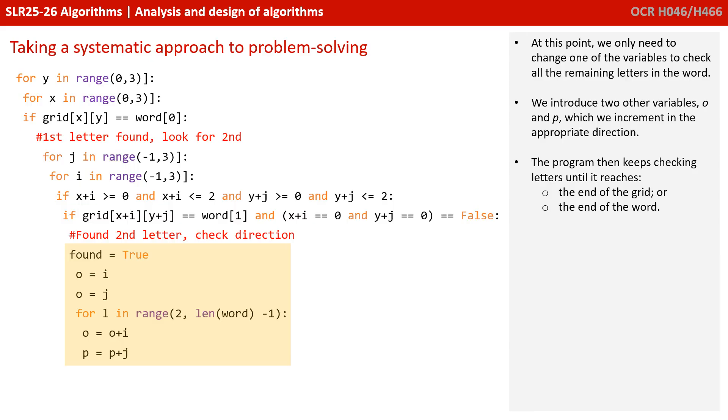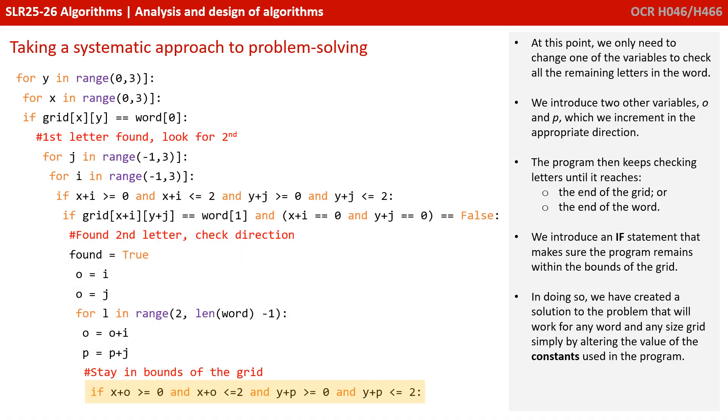And we're going to check up until either we reach the edge of the grid or we're going to reach the end of the word we're looking for. So we introduce a statement that makes sure we stay within the bounds of the grid, and then we can check if the letter in the grid matches the letter in the word. At this point, we've used our algorithmic thinking to create a solution to the problem that will work for any word and any size grid. We just need to change the value of the constants in our program.